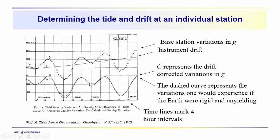These are drift-corrected curves. Curve C is the observed gravity variation and D is the calculated gravity variation. The difference between D and C is that in D, you treat the Earth as though it were completely rigid and unyielding. In fact the Earth also deforms, so you're a little bit further away from the Earth during tidal highs than during the lows. There's actually some deformation, and that dashed line does not incorporate that deformation.